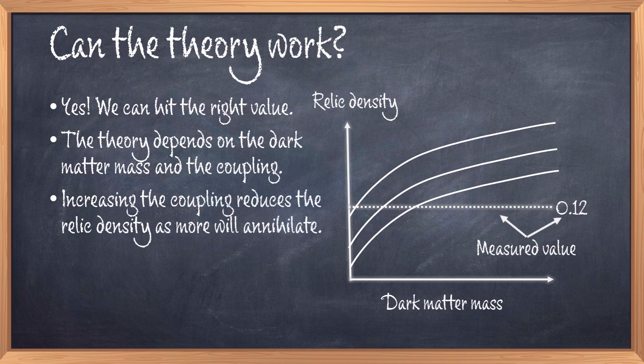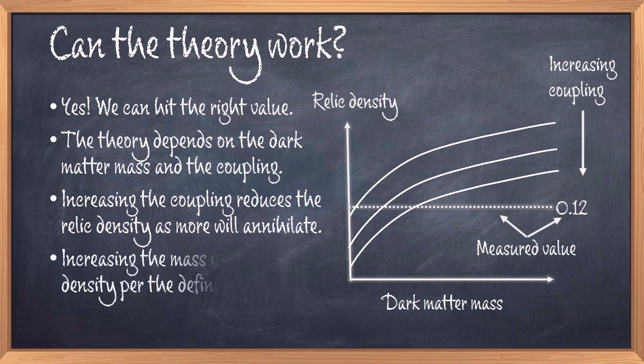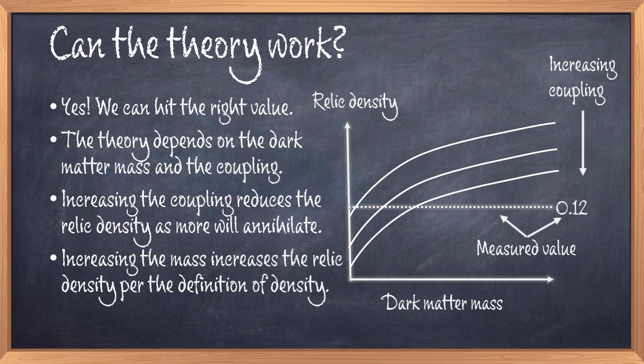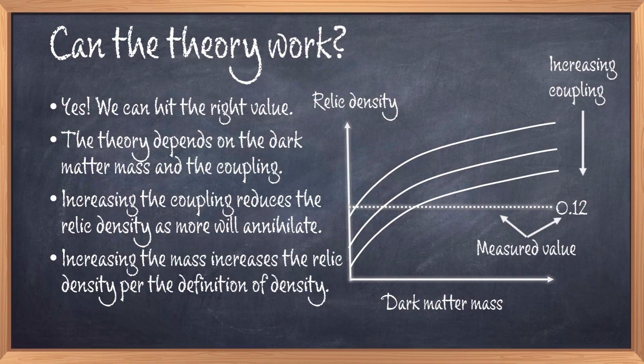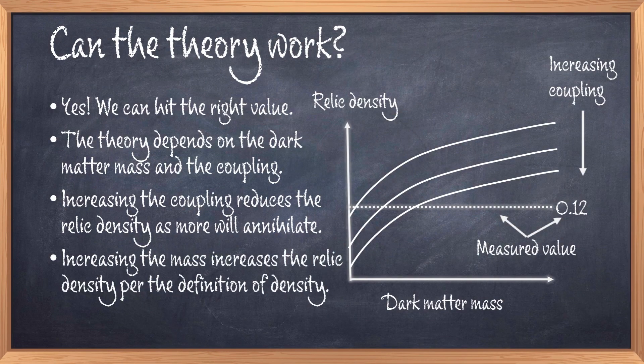We recall that the dark matter density depends on how much dark matter survived the annihilation and reached the freeze-out where annihilation stopped. If we have a stronger coupling, then we have more interaction and thus more annihilation, and thus less dark matter would survive. Relic density would consequently be lower. Since density is mass per volume, it makes sense that increasing the dark matter mass would increase the dark matter relic density. So it is why we see that the line is growing with the mass. We don't know the real value for the mass or the coupling, but if we knew one of the values, we would know what the other value should be to fulfill the requirement of the relic density.